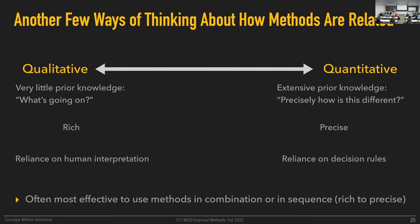It is often most effective, in terms of the confidence you can have about the phenomenon you're studying and the strength of the claims you're making, to use methods in combination — in sequence or in parallel. We'll talk a lot more about designs for mixed methods studies. Often it's useful to do both as part of any individual study. Even purely numerical evaluations are probably not the most effective design when focused solely on numbers.